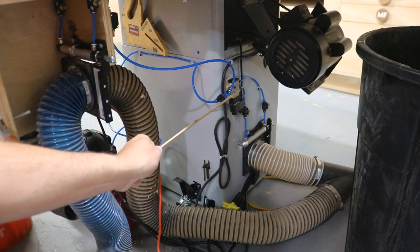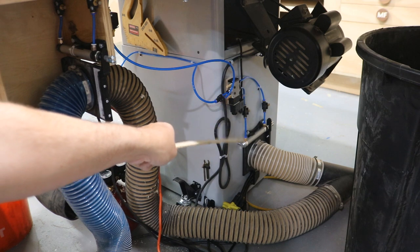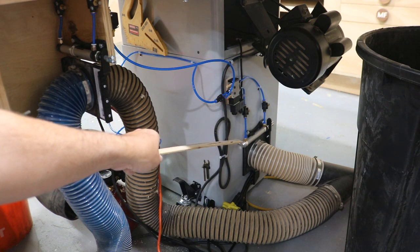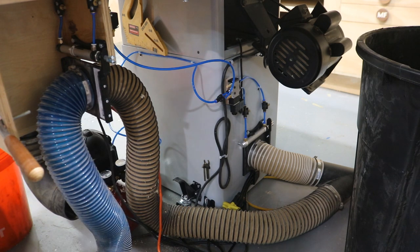The other air line runs into this solenoid, and it runs that actuator that runs the blast gate for the table saw. I'm going to turn the table saw on. You can see the blast gate working.